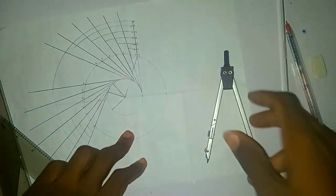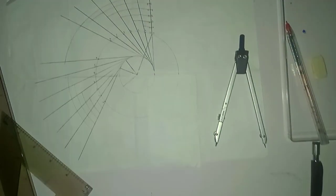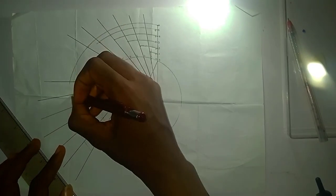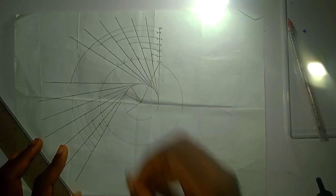That's how it looks like. Having done that, you just have to mark all those points and use a French curve to join those points together.